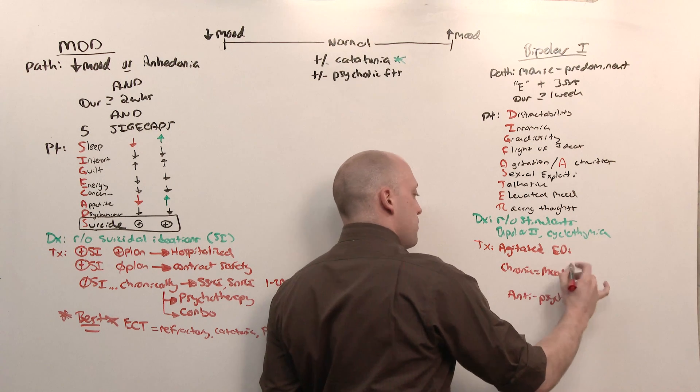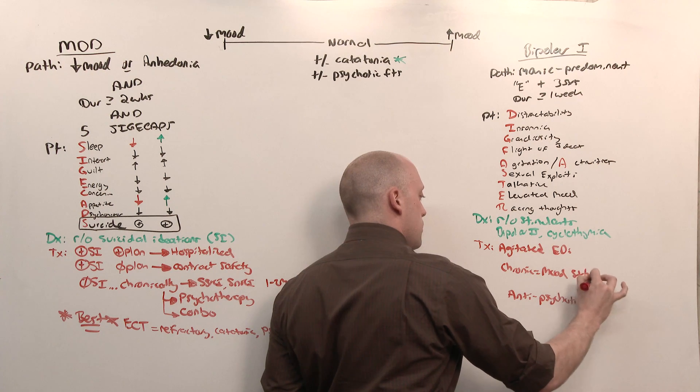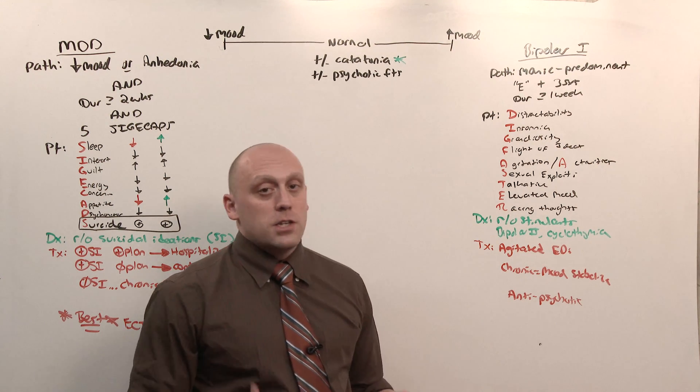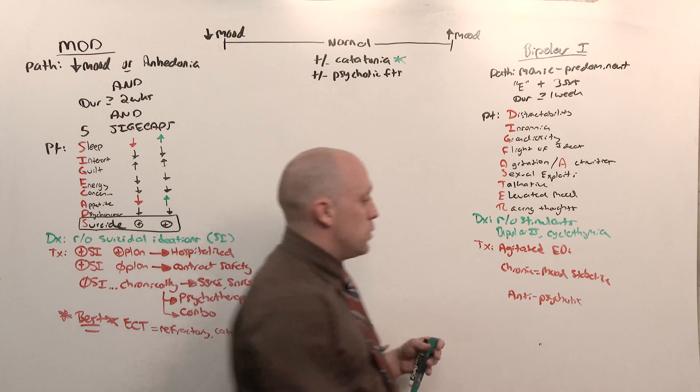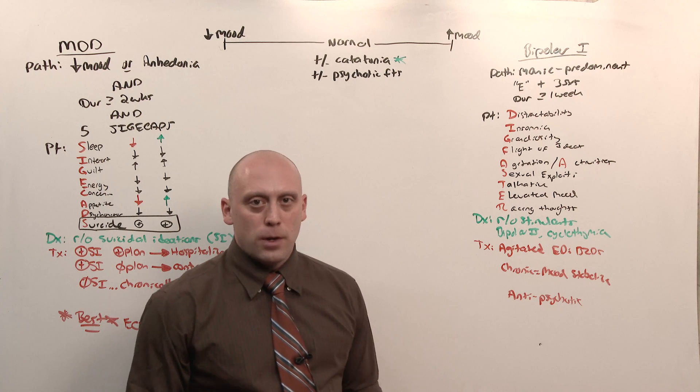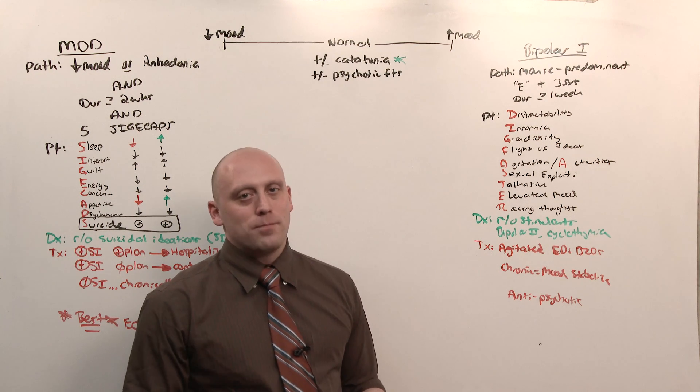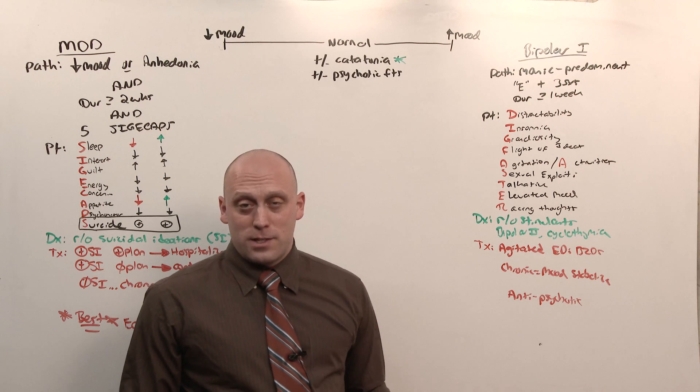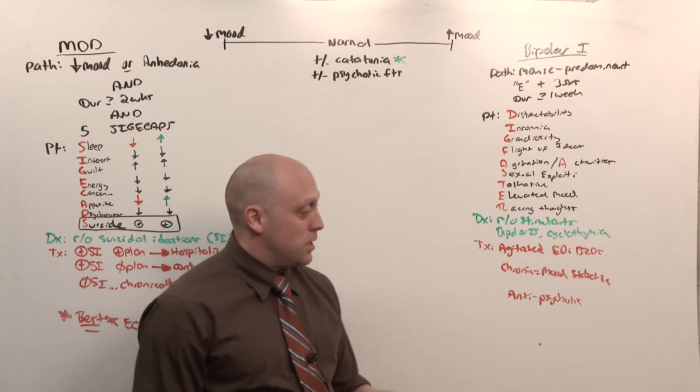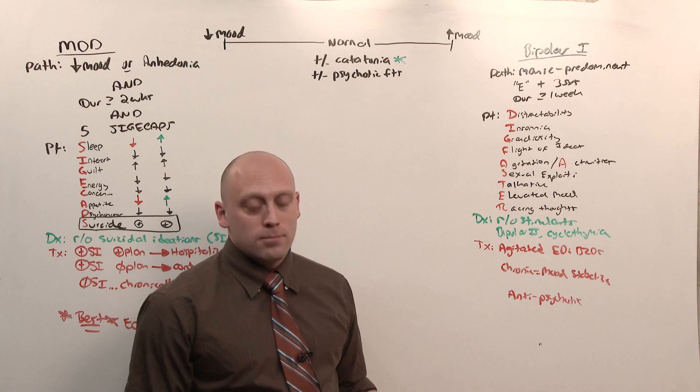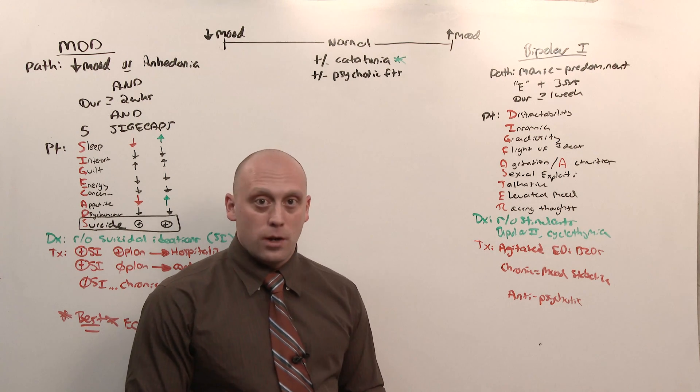First, if they're agitated in the ER and you need to sedate them, you put them down, use benzos. You will see the B52: haloperidol, lorazepam, diphenhydramine, usually IM. That's never the right answer on the test. That's too extreme. It's essentially chemical restraints. The benzos can help person come down from the mania enough for you to talk to them and find out what's going on.